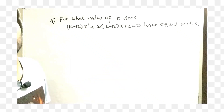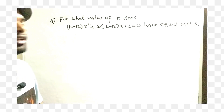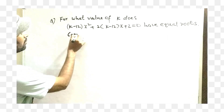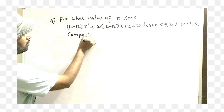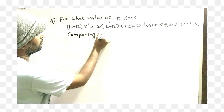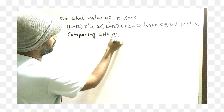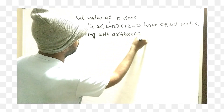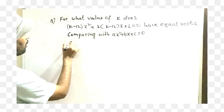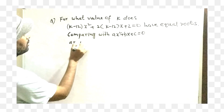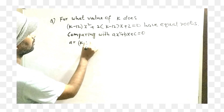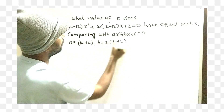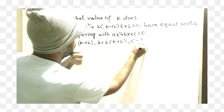This equation should be compared with ax squared plus bx plus c equal to 0. Comparing with ax squared plus bx plus c equals 0: here a equals k minus 12, b equals 2 into (k minus 12), and c equals 2.